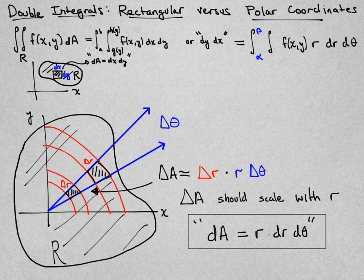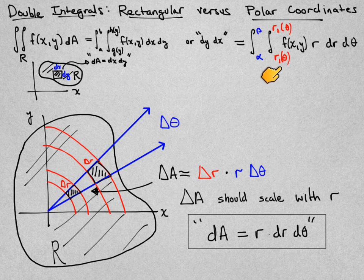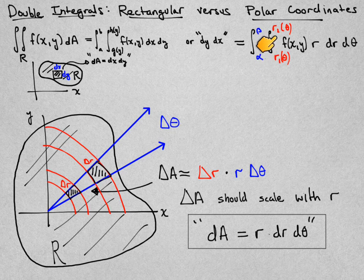You then need to set up your limits of integration. Theta will range through some range of angles. And then the inner limits, if we're doing it in this order, will range between potentially some functions of theta that determine the radius of the region that we're integrating through.